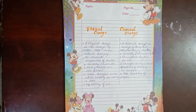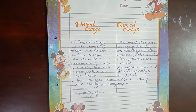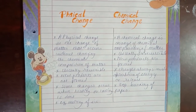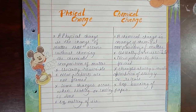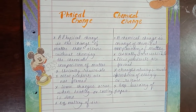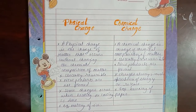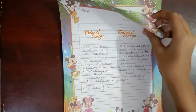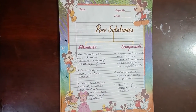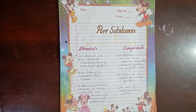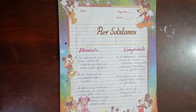Here is the difference between physical change and chemical change. The next is the differentiation between elements and compounds.